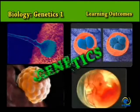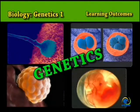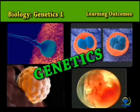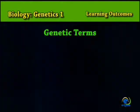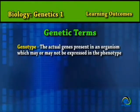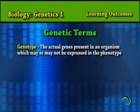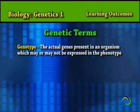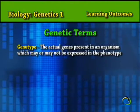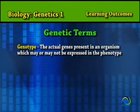When studying genetics, there are terms with which you should be familiar. These terms include: Genotype — the actual genes present in an organism, which may or may not be expressed in the phenotype.